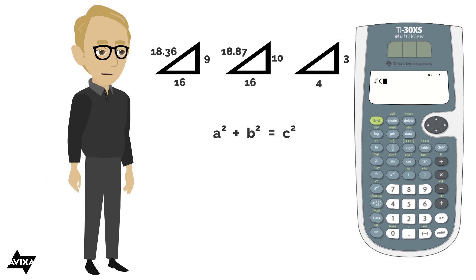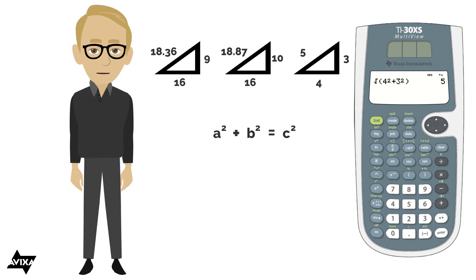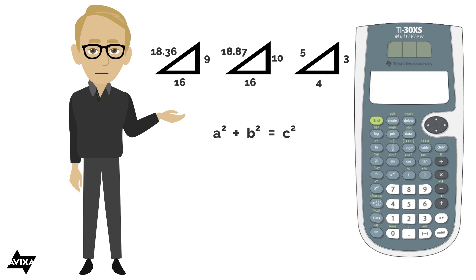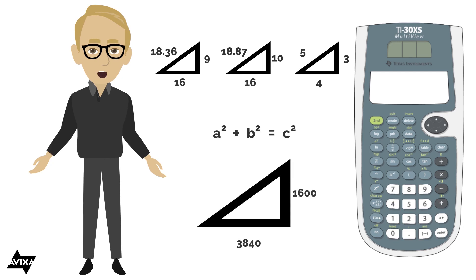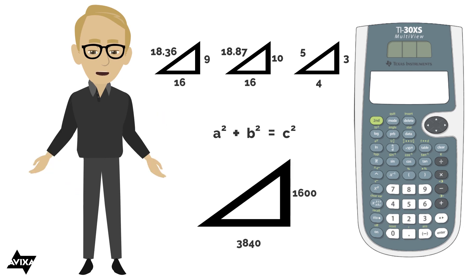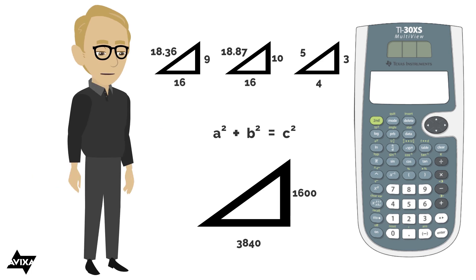Let's do the same for a 4:3 aspect ratio. We enter the square root of 4 squared plus 3 squared, close the parentheses, and hit enter — the answer is 5. This is the classic 3-4-5 triangle. Finally, for a 3840 by 1600 display with a 24:10 aspect ratio: the square root of 24 squared plus 10 squared gives a diagonal relationship of 26.